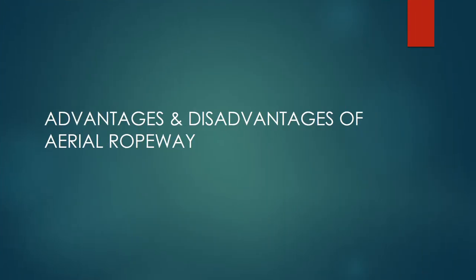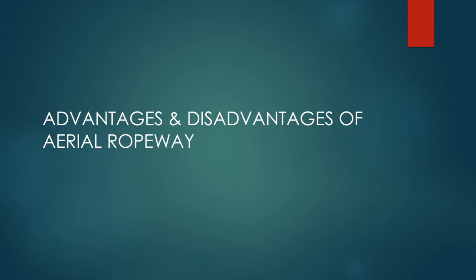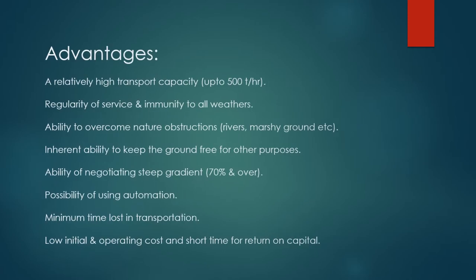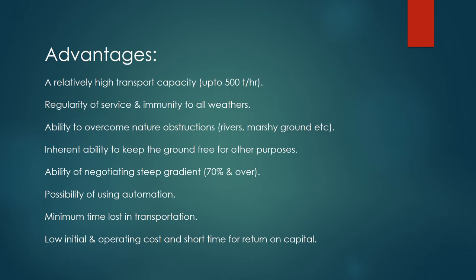Advantages and Disadvantages of Aerial Ropeway. A relatively high transport capacity, up to 500 tons per hour.